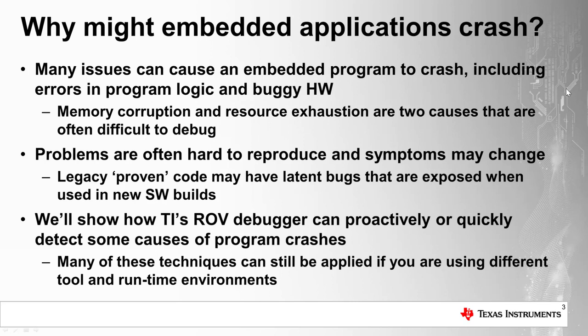Two more system-level problems that can lead to difficult-to-debug program crashes are memory corruption and resource exhaustion. Examples of memory corruption include stack overflows, buffer or array overflows, bad pointers, an incorrect memory map, or code that's not interruptible or thread-safe.